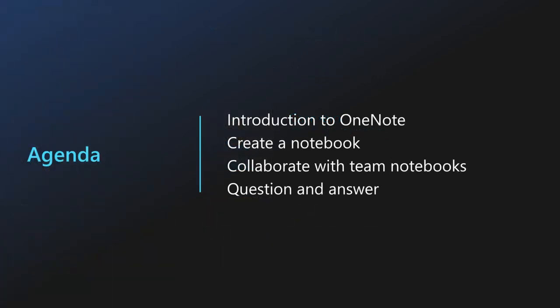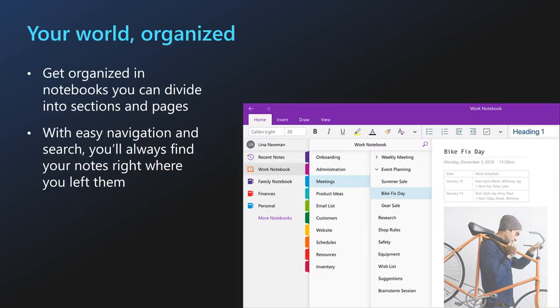Today we're going to learn about how you can organize your world, gather and enhance your thoughts, and share and collaborate inside of OneNote. By the end of today's session, we'll show you how to create a notebook, how to collaborate with team notebooks, and answer any questions throughout. With OneNote, you can sort content across notebooks with sections and pages. You can highlight can't-miss notes with important and to-do tags, or use the OneNote web clipper to save content with a single click, and with easy navigation and search you can find information quickly.